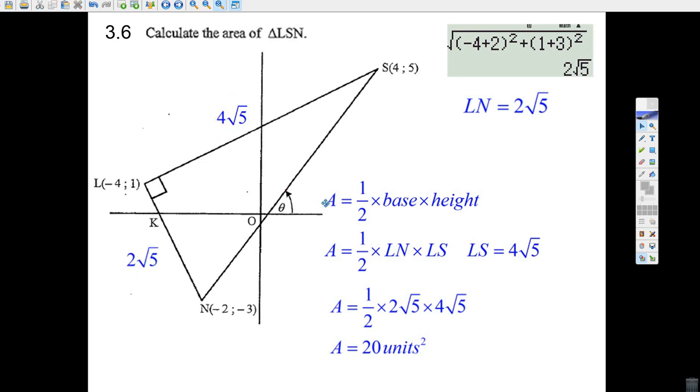Hey, it's good to leave it as surds because half the base times the height, half of LN times LS. We knew that LS was 4 root 5, so it's a half times 2 root 5 times 4 root 5. Well, half of 2 is 1, root 5 times root 5 is 5, and 4 times 5, I don't even need a calculator, it's 20 square units. There you go, that's that one done.